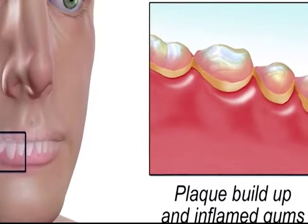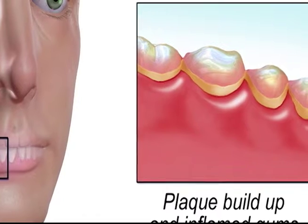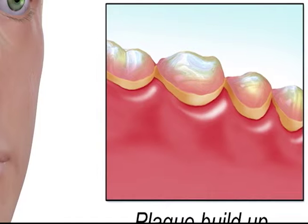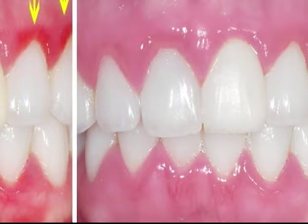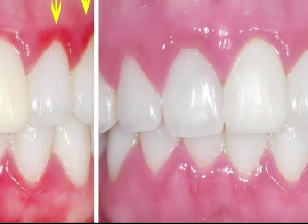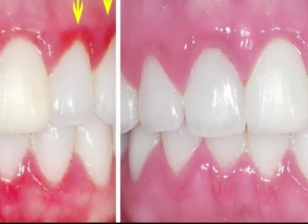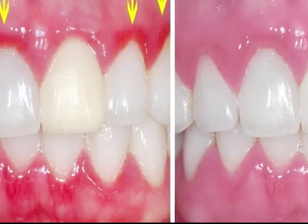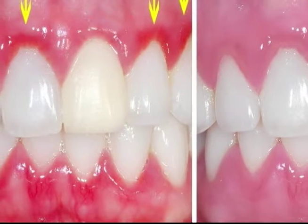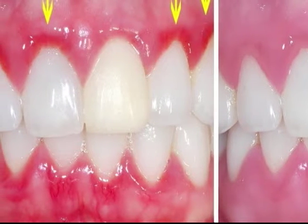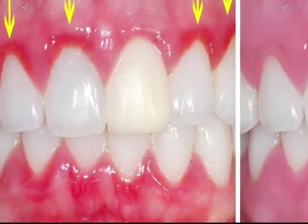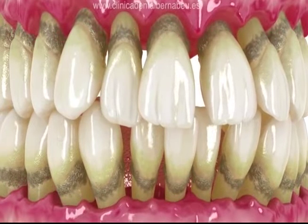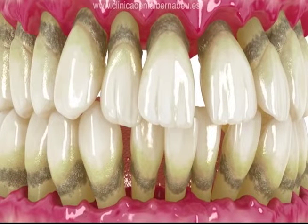Si el cepillo y el uso diario del hilo dental no eliminan la placa, ésta produce toxinas que irritan el tejido gingival, provocando la gingivitis. En esta primera fase de la enfermedad, el daño puede corregirse, ya que el hueso y el tejido conectivo que sostienen los dientes todavía no han sido afectados. Sin embargo, si se deja sin tratamiento, la gingivitis puede transformarse en periodontitis y provocar daños permanentes a los dientes y la mandíbula.